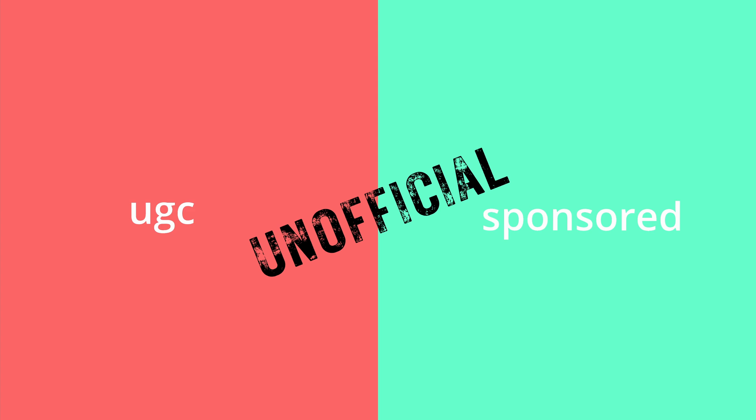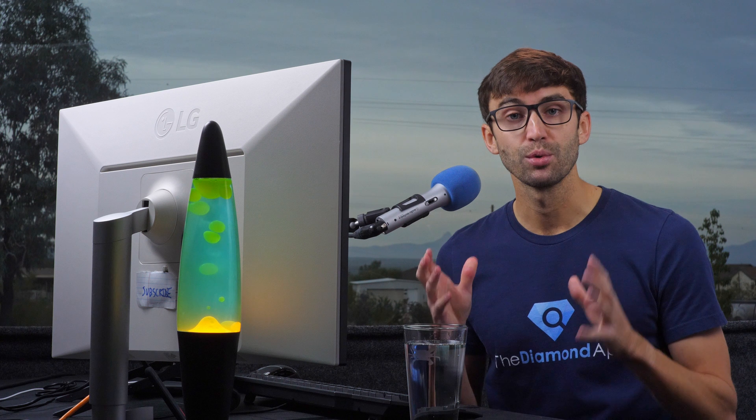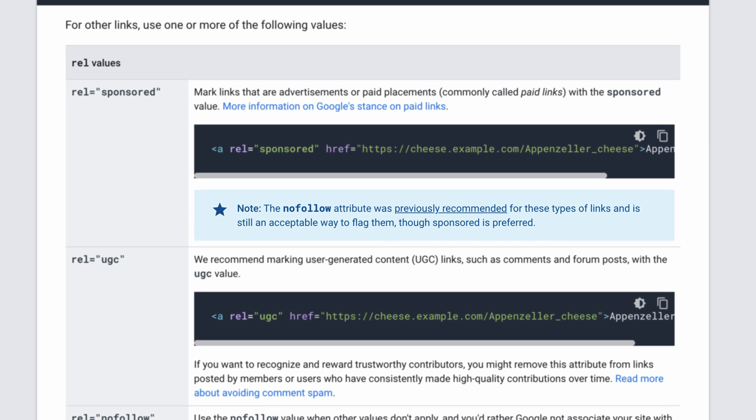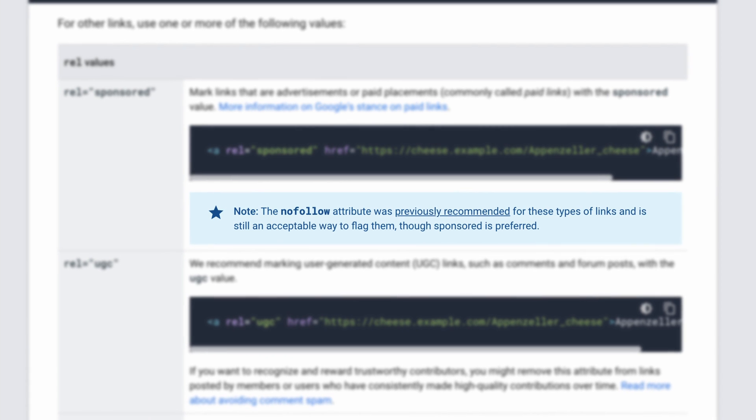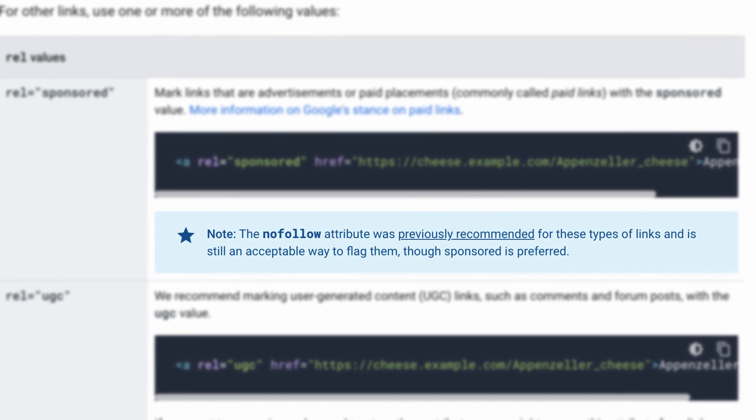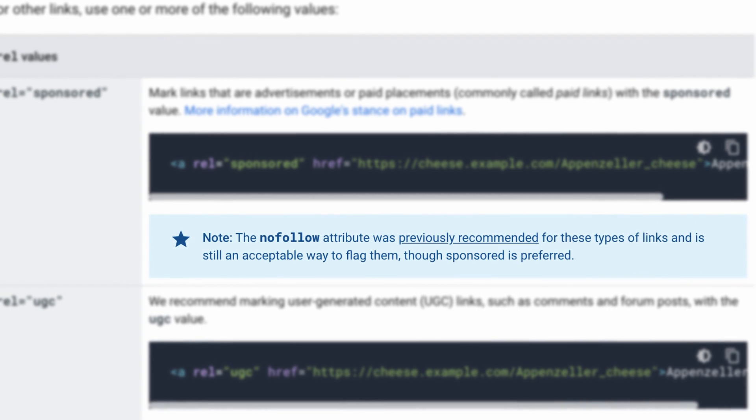Now, since the sponsored and UGC values are not recognized by the HTML standard yet, in order to be backward compatible, it might be a good idea to use a rel value with both nofollow and sponsored. Additionally, from Google's perspective, nofollow on its own is still a valid way to qualify paid links. However, they do state that they prefer you to use sponsored links.